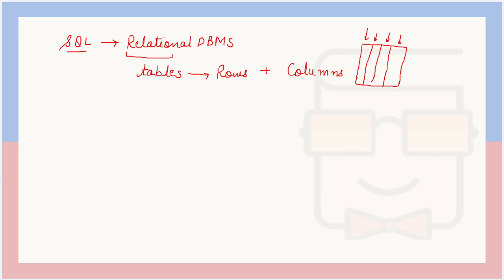For example, if there is a database containing student details, the first column or attribute is the student name, the second is the course the student is studying, the third is whether the student uses transport, and the fourth is whether the student has taken the hostel facility or not. These are different columns that define each row or each student in the database. Each column has a fixed type of values, and that type is known as the data type of that particular column or attribute.